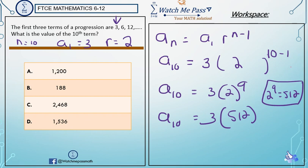Now if I take 512 and times it by 3, I am going to get 1536.